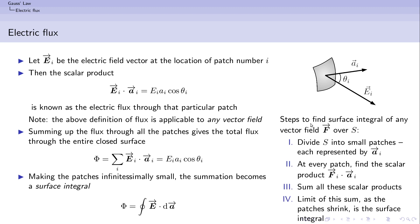To find the flux, we have computed the surface integral of the electric field over the closed surface. In general, for any vector field, these are the four steps we follow: first, divide the surface into small patches each represented by an area vector Aᵢ; second, find the scalar product Fᵢ · Aᵢ at each patch; third, take the sum of all these scalar products over the entire closed surface; and fourth, take the limit as the size of the patches becomes smaller and smaller — that becomes the surface integral. For any vector field, finding the surface integral gives us the flux of that vector field.